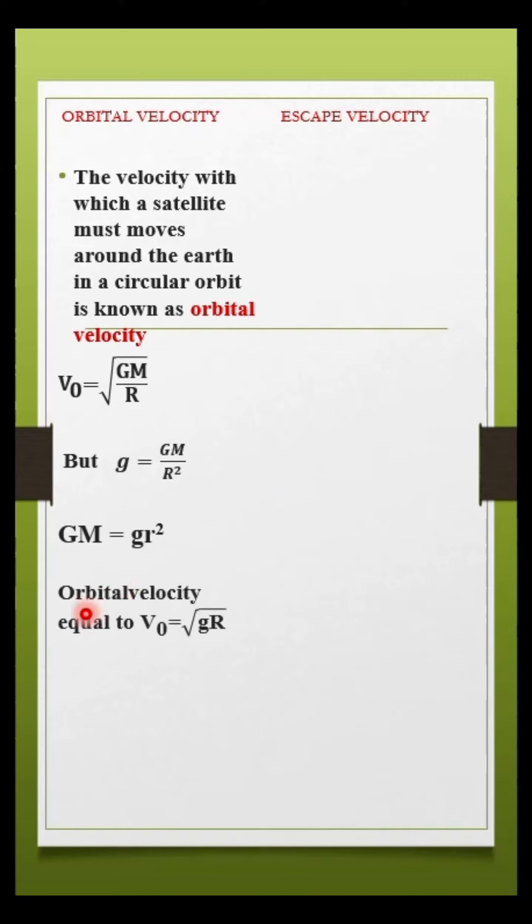By substituting that value, we get orbital velocity v₀ = √(gR). Substituting the values of g and R, we get v₀ = 7.92 km/sec.